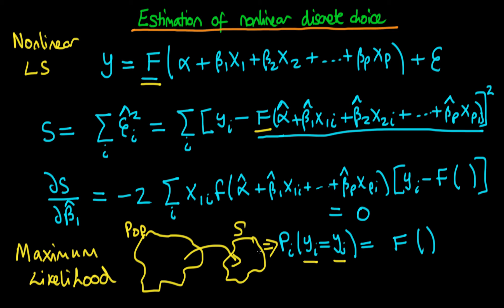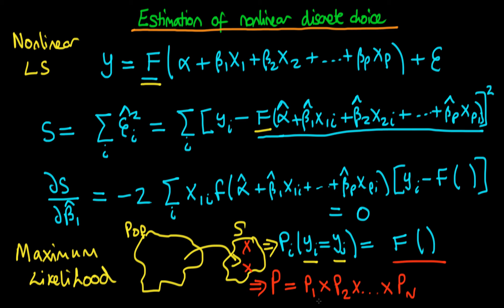We've got this probability value for one individual in our sample. Imagine we had two individuals — we could think about the probability that both individuals were predicted correctly in terms of their dependent variable as p1 times p2, assuming independence. More generally, this p represents the probability that we would have got our observations if the population was actually determined by our F. For a sample of n individuals we would have p1 times p2 all the way through pn.